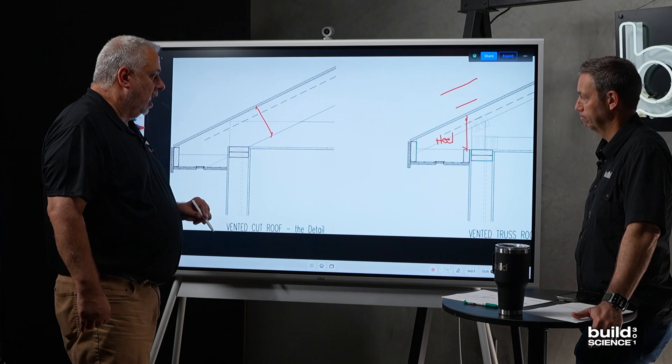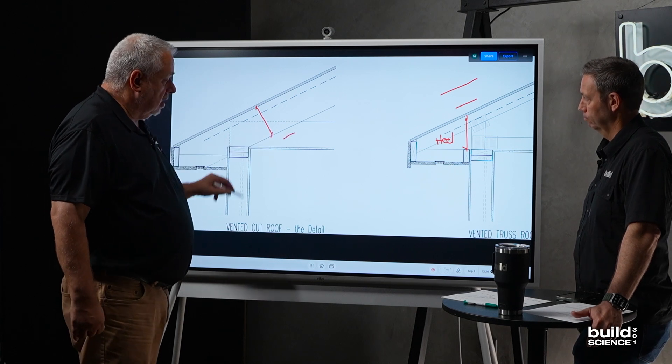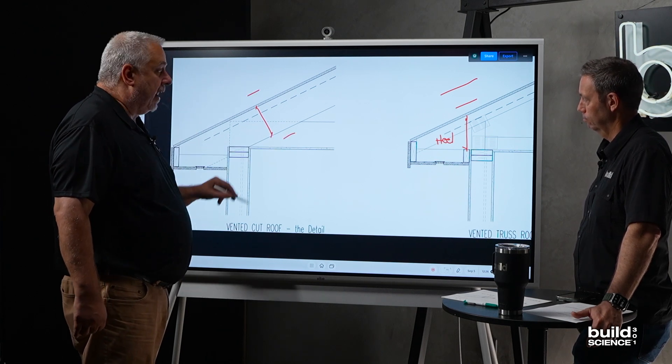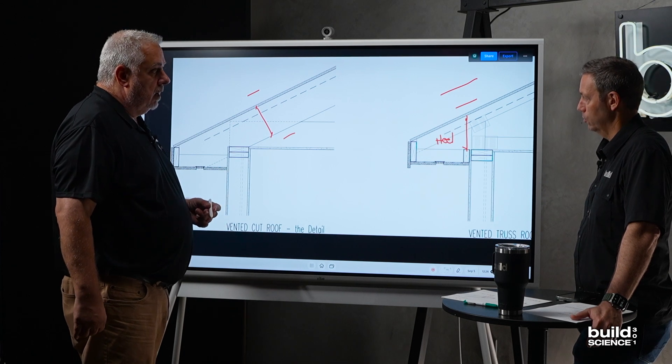Yeah, whereas the cut roof, we either have to do something below the rafter or above the rafter when we start exceeding the dimension of the rafter. Yeah, that's right.